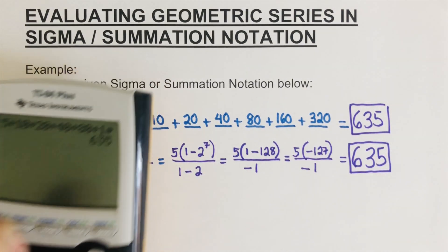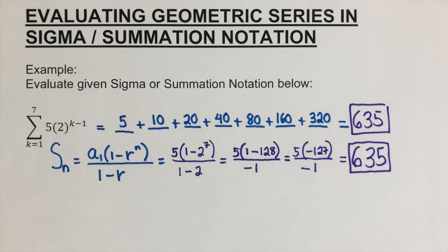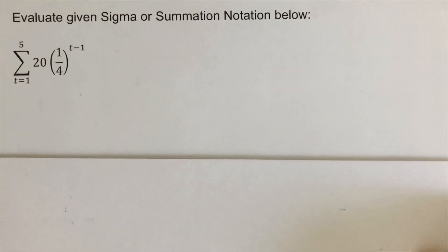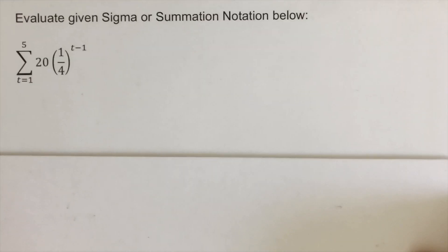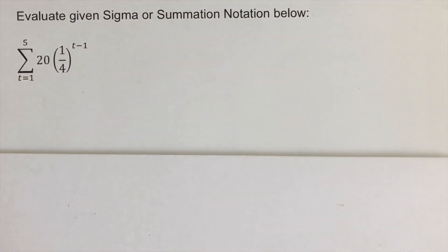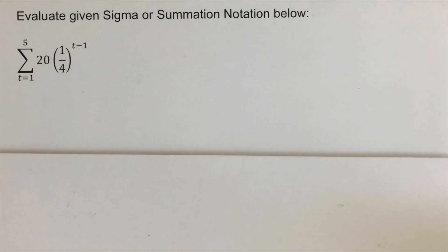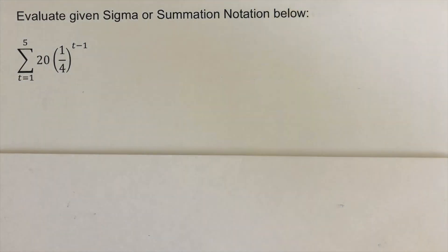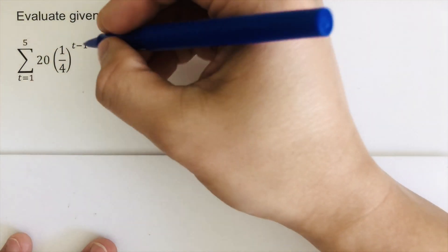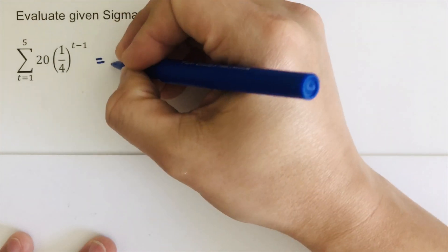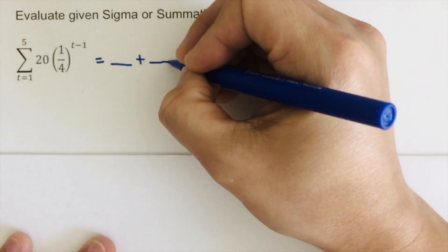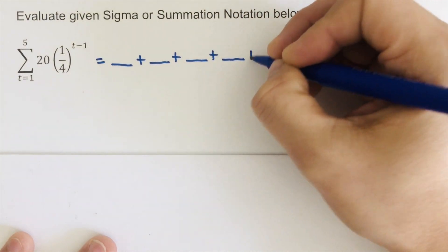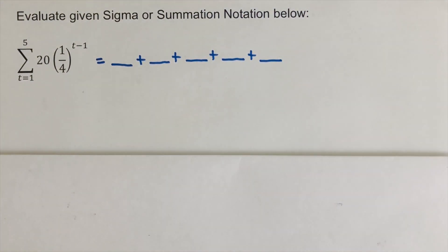I would encourage you to pause the video and try this second problem out on your own. When you're done, unpause and check your answer. So let's get started. We write this all out just like the first one. There are five blanks: one, two, three, four, five.